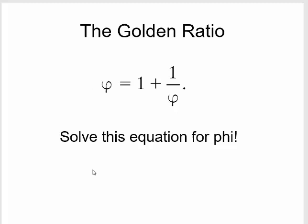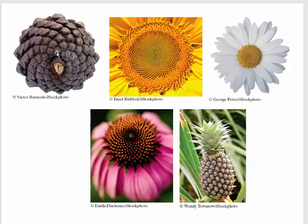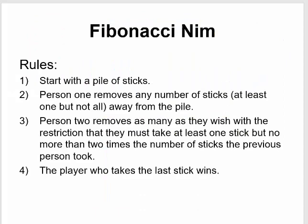The golden ratio occurs naturally in the real world. Going back, you see the golden ratio when you divide the larger number of spirals by the smaller number of spirals on a pineapple. The same thing happens with the daisy, and the sunflower, and so on — you would see the golden ratio coming up naturally in the real world.